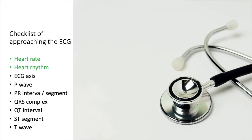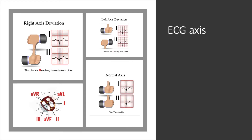The next thing to look at is the ECG axis. With the ECG axis it's important to refer back to how the heart sits in the body and how the ECG leads work. A normal ECG axis will essentially be positive in lead 1 and also positive in lead 2.